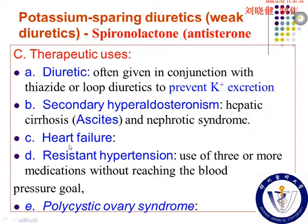In the treatment of heart failure, spironolactone has attracted many physicians' attention. For patients with heart failure, they may also have relatively higher activity of the RAAS, and the last substance in this system is aldosterone. So in the treatment of chronic heart failure, spironolactone is very useful. You will study this in detail again in the chapter on drugs for heart failure.